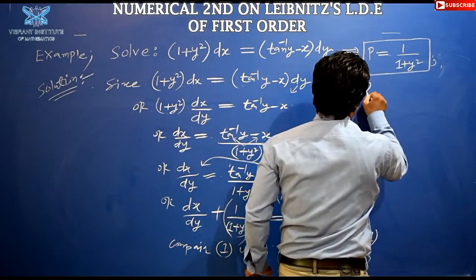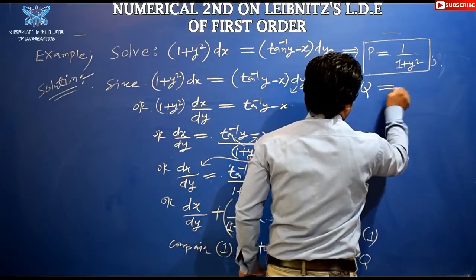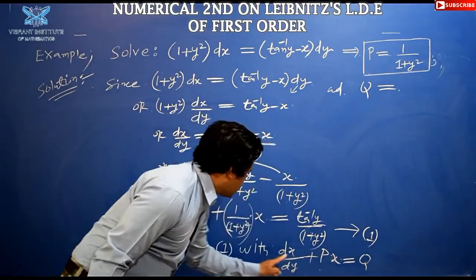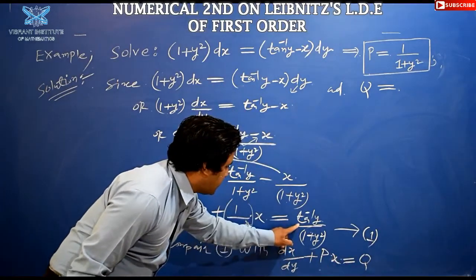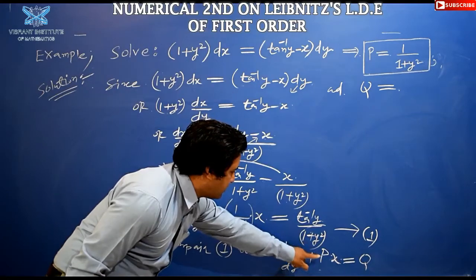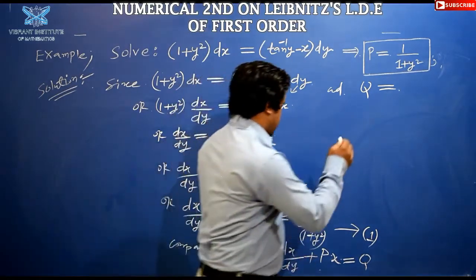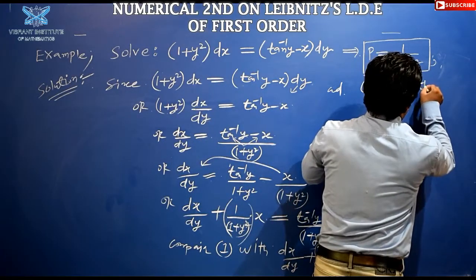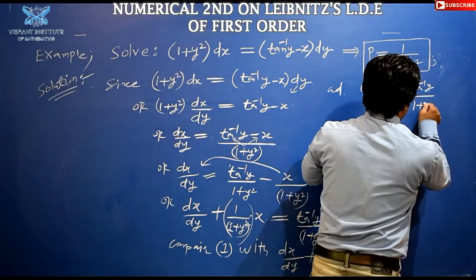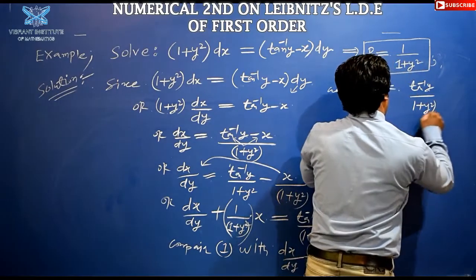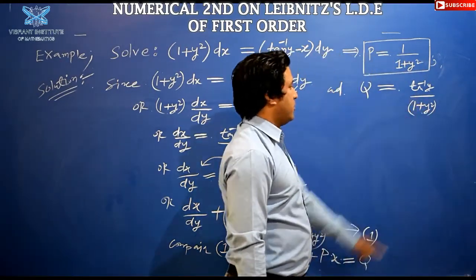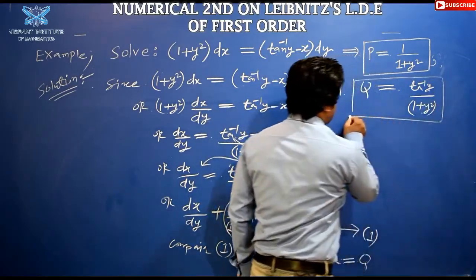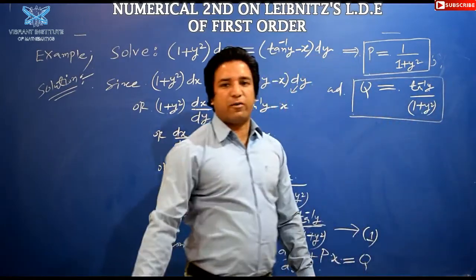And Q is the right-hand side: Q = tan⁻¹y / (1 + y²). This is the second important box. Now we must find the integrating factor.